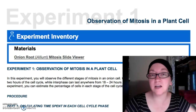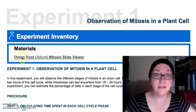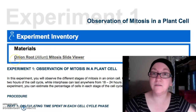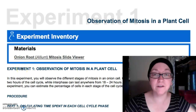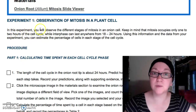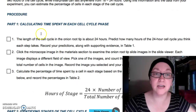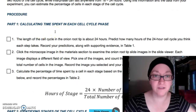For this one it's not anything hands-on — it's just a virtual online experiment. You can see the materials and there is a link for a slide to view later. Always read everything first before you get started. Experiment one is about observation, and then the procedure is part one: calculating the time spent in each cell cycle phase.